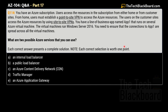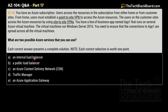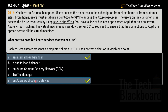Regarding scoring: if a question is worth 10 points and you must pick two correct options, each correct option is worth 5 points — so picking one correct answer still earns partial credit. The options are: A) internal load balancer, B) public load balancer, C) Azure content delivery network, D) traffic manager, E) Azure application gateway. The two correct answers are A — internal load balancer — and E — Azure application gateway.